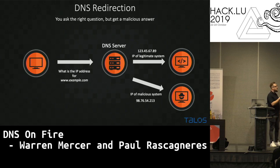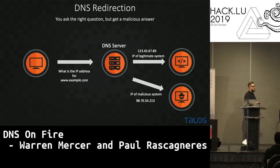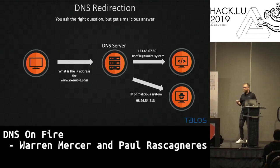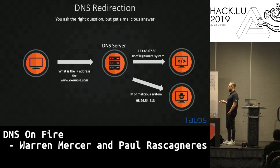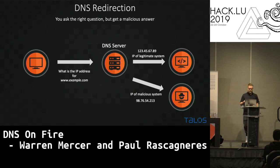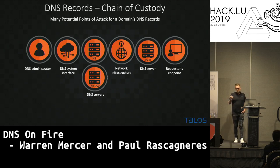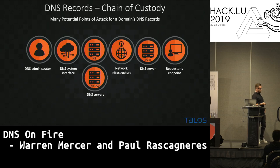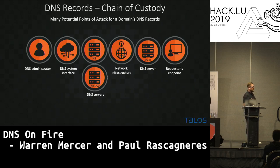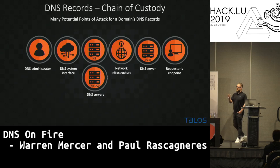DNS redirection is slightly different. You send out your request for example.com or google.com, the DNS server responds back to you, but when you're doing redirection and DNS hijacking, you'll have intercepted at a point and sent different information back. Places where that can happen include the DNS administrator, DNS system interfaces like bind, local host service boxes, DNS servers on your network, other network infrastructure like your switch access or DNS proxy, and the endpoint — for example, host files. So there are various points along the chain where an attacker could get in and cause DNS redirection or hijacking.